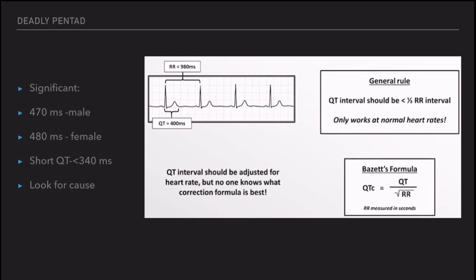When the corrected QT is 470 ms or 480 ms — in males and females respectively — it is called long QT. When it is less than 340 ms, it is called short QT. Both long QT and short QT predispose to arrhythmias, especially ventricular tachycardia, which can lead to syncope. When you find a long QT, always look for the cause — especially electrolyte abnormalities like hypocalcemia, hypomagnesemia, and hypokalemia, and drugs like fluoroquinolones and clindamycin, and also hypothyroidism.